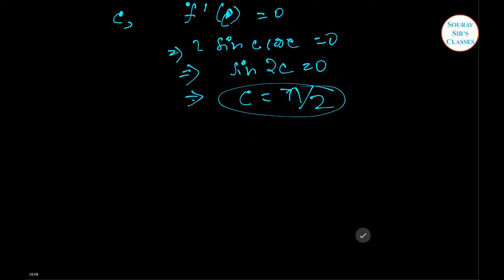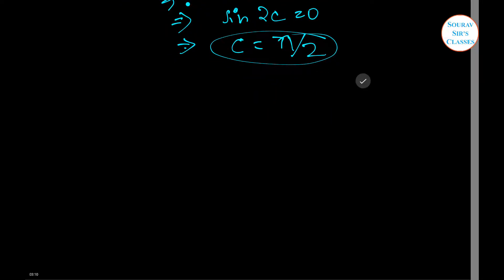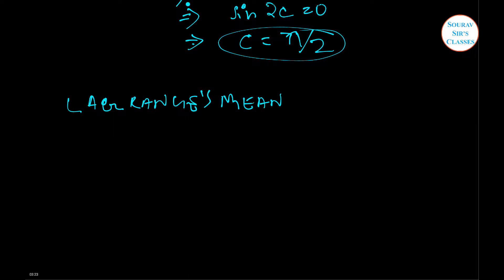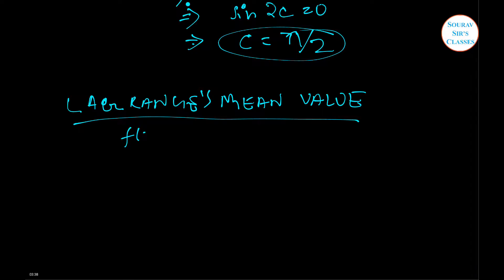Thus this is what the whole theorem is. Next we are going to do Lagrange's mean value theorem. For this, previously we had 3 conditions to fulfil, but here we are going to have 2 conditions to fulfil. The given condition should be that f(x) will be a function defined in the closed interval of a and b.